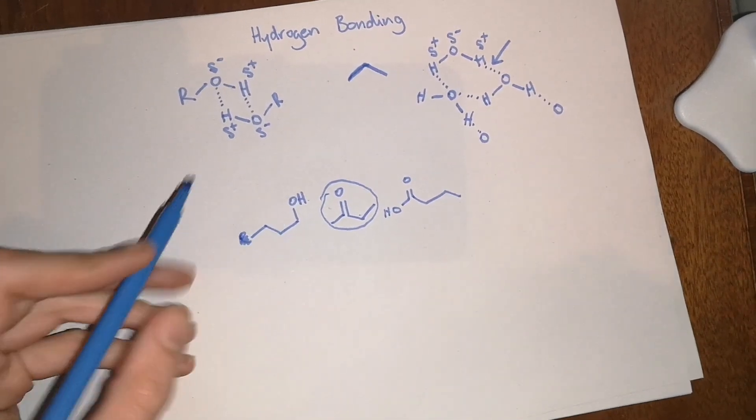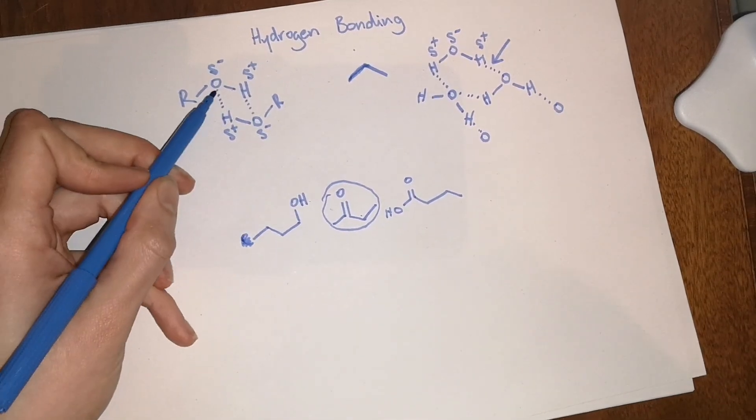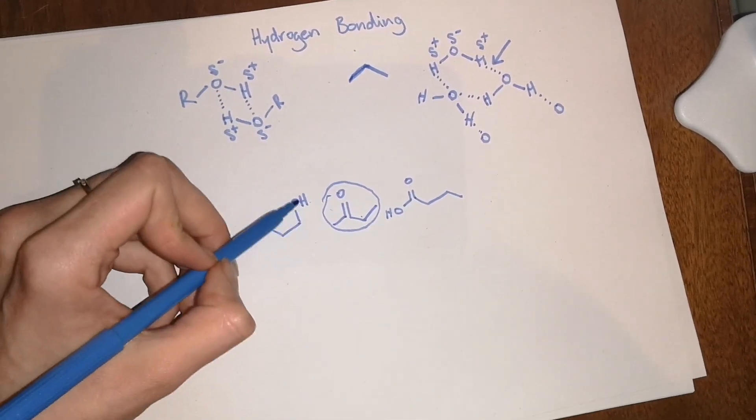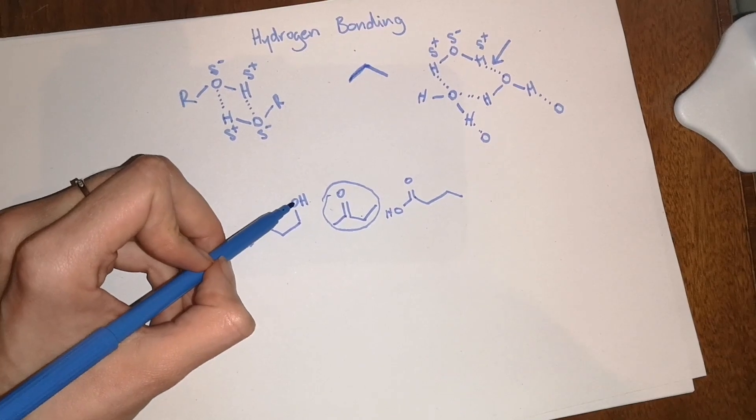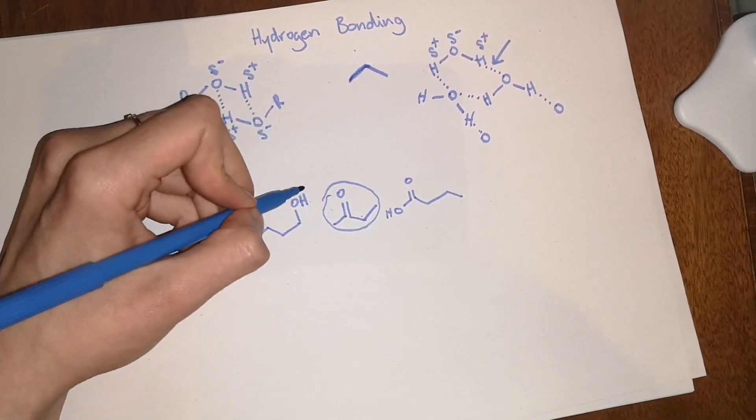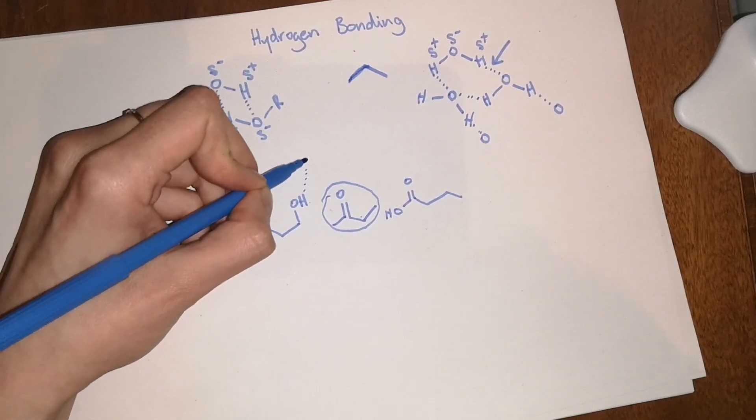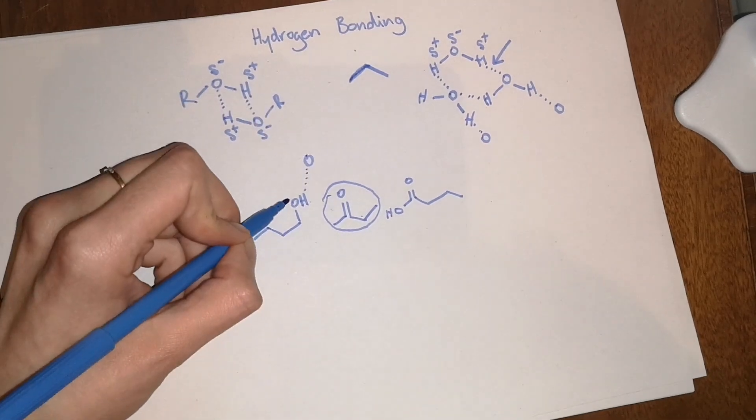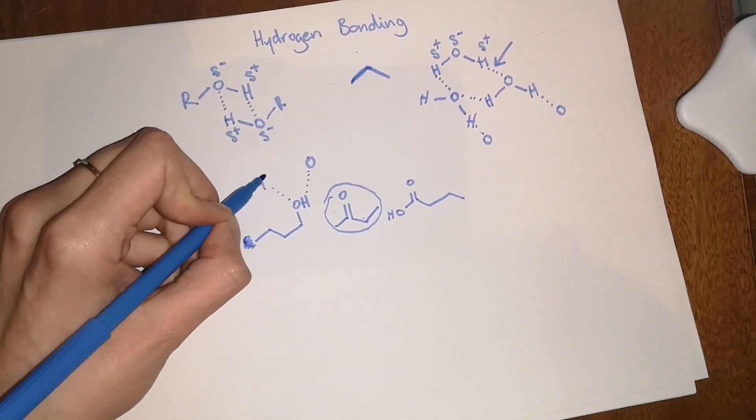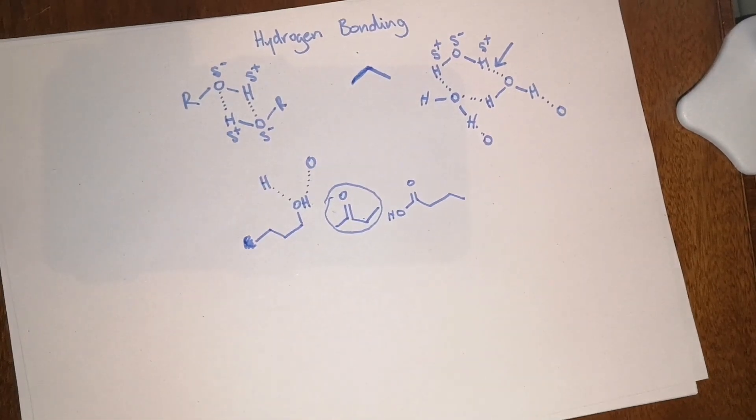However, if you compare it to this alcohol, much like up here, each molecule of this alcohol can form two hydrogen bonds. It can form a hydrogen bond from this hydrogen to another oxygen and from this oxygen to another hydrogen of a neighboring alcohol molecule.